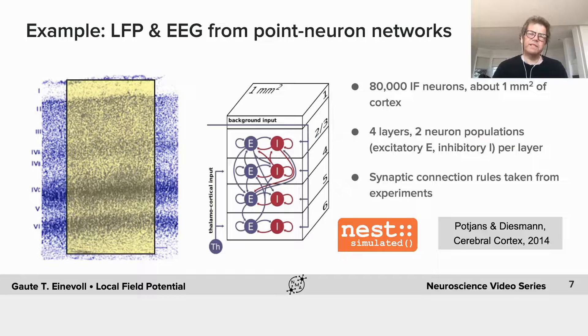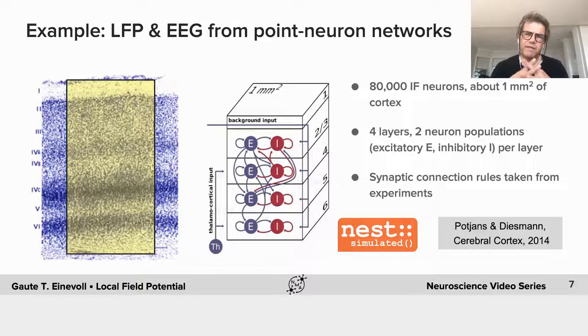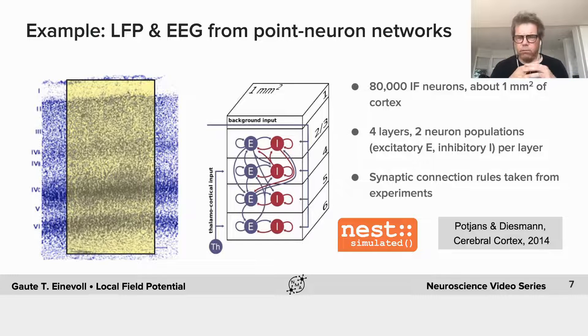So here's another example. This is a network that was developed a few years ago by Potejans and Diesmann. And it's a simplified model for a piece of cortex, one square millimeter, containing 80,000 neurons.